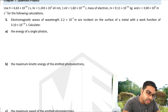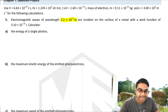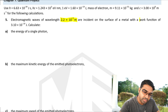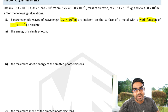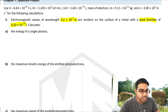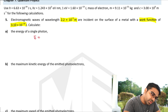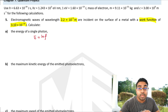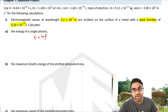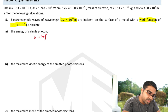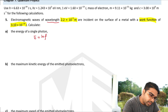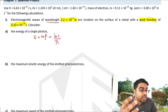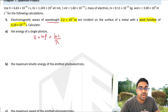Now a more complicated question. Electromagnetic waves of wavelength 2.2 times 10 to the power of minus 7 metres are incident on the surface of a metal with a given work function. Calculate the energy of a single photon. The formula is E equals HF, but since we have wavelength rather than frequency, we substitute F as C over lambda using the wave equation V equals F times lambda, giving us E equals HC over lambda.